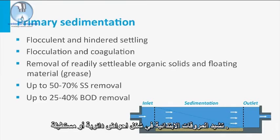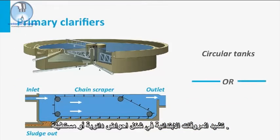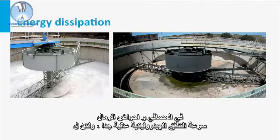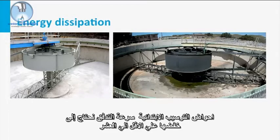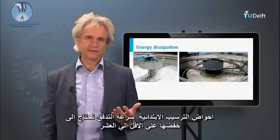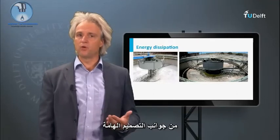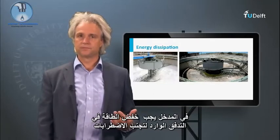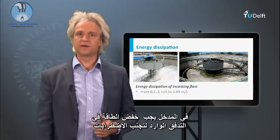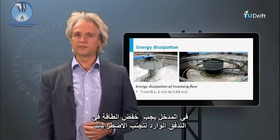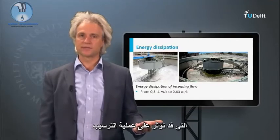Primary clarifiers are constructed in circular tanks as well as in rectangular tanks. In screens and grit chambers, the hydraulic flow velocity is very high, but for the primary settler, the flow velocity needs to be reduced by at least a factor of 10. Therefore, the inlet works and flow distribution of the incoming flow into the clarifier are important design aspects. At the inlet, energy dissipation of the incoming flow is required to avoid turbulence that might affect the settling process.